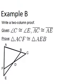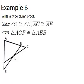All right, let's go to example B. Write a two-column proof, given angle C is congruent to angle E. So let's mark that in.